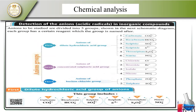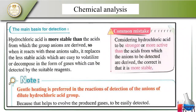Let's look at each group reacting with dilute sulfuric acid and start working. The main basis is that hydrochloric acid is more stable — the group ions that are less stable decompose easily, producing gases that we can work with. So let's look at the reactions with the basic part.